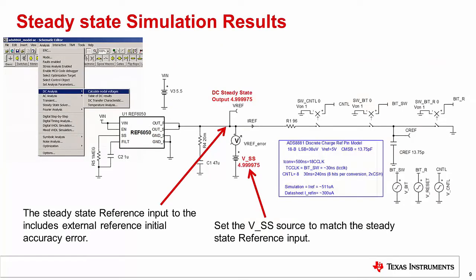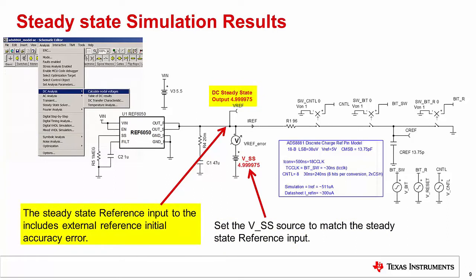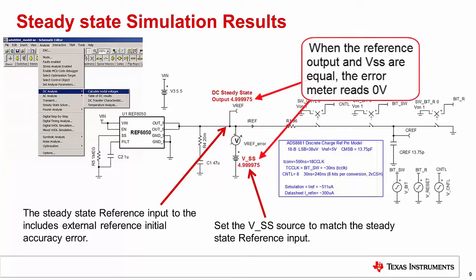In this slide, we will configure the reference settling error measurement meter. The meter needs to be configured to read zero error when the voltage at the reference input is settled by the steady state output of the reference driver circuit. In other words, when the reference voltage is fully settled, the error should read zero volts. This is achieved by setting the voltage source VSS on the bottom side of the meter to a DC voltage equal to the steady state reference output. It is important that this voltage is accurate to the microvolt level as we will settle to microvolts of error. This is why we increased the simulation numeric precision to six digits. The transient reference output voltage is then compared to the DC steady state voltage source VSS, and when the voltage at the reference input is fully settled, the Vref error meter reads zero volts.